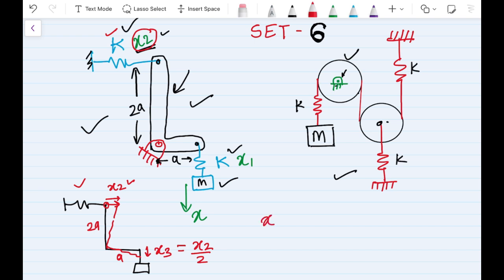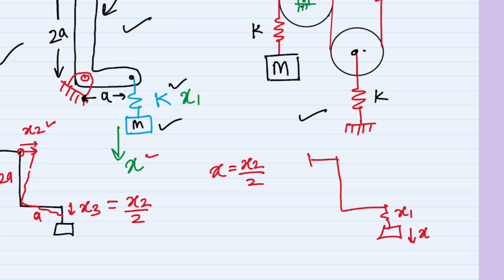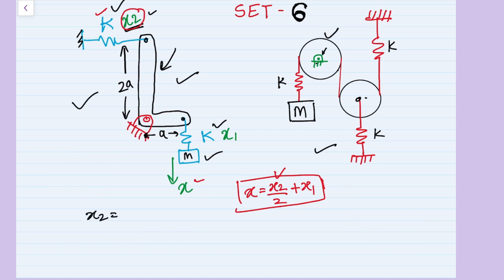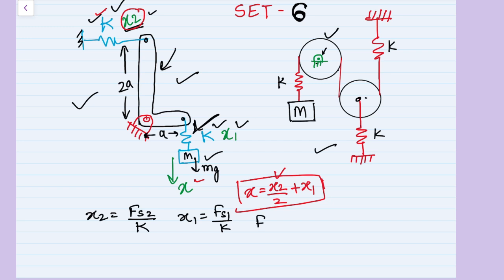By superposition, considering only the top spring, the mass displacement contribution is x2 divided by 2. Now considering the second spring alone and ignoring the first spring, whatever displacement the second spring has is directly experienced by the mass, so that term is x1. The final expression is x equals x2 by 2 plus x1. We can express x2 as Fs2 divided by the stiffness k, and x1 as Fs1 divided by k, where Fs1 equals mg since the first spring carries the weight.